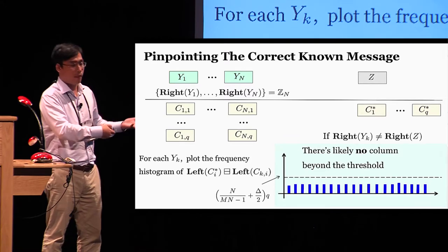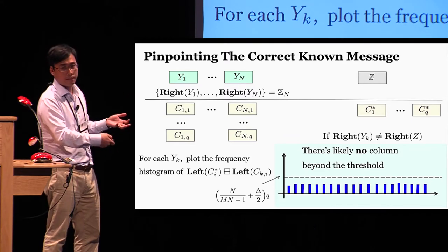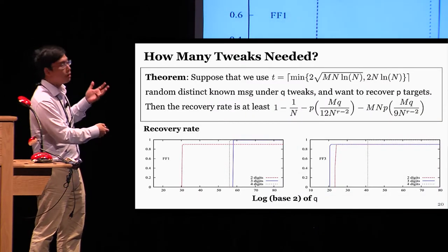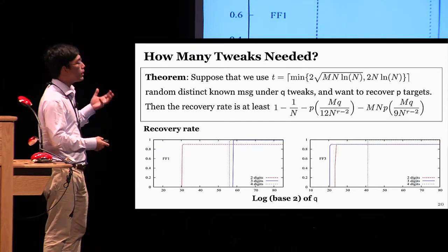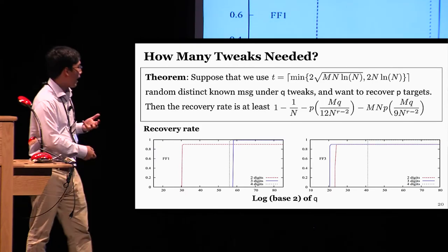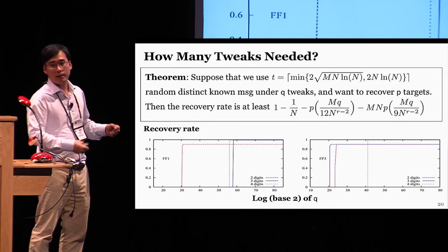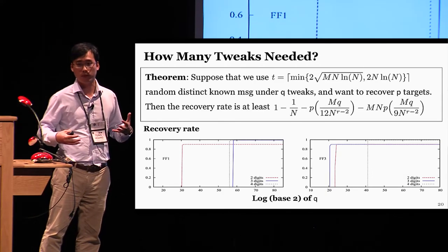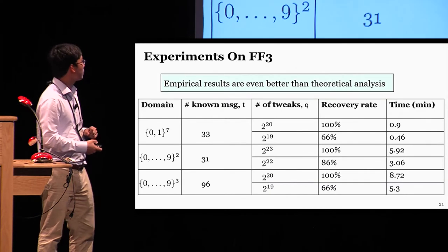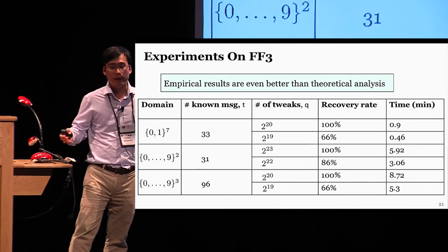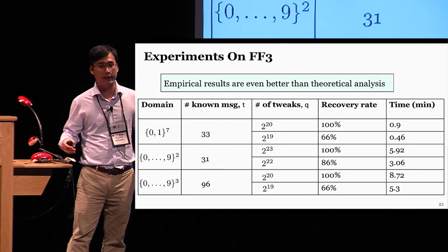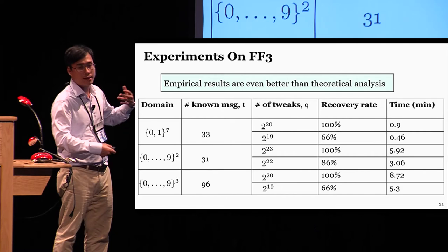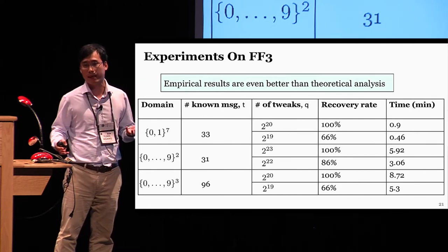This attack is only possible if the tweak number Q is large enough. We have a lower bound for the recovery rates if you use Q tweaks and want to recover P targets, along with an illustration of that bound for FF1 and FF3 where you want to recover the entire codebook. We actually ran some experiments on FF3, and the empirical results are even better than the theoretical analysis — even with values of Q quite smaller than suggested, we can achieve 100% recovery rates.